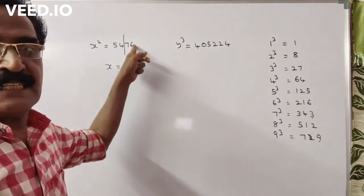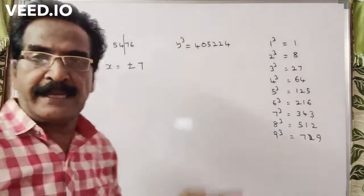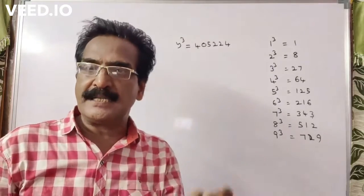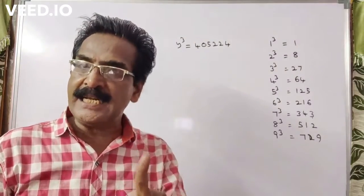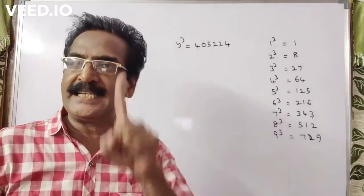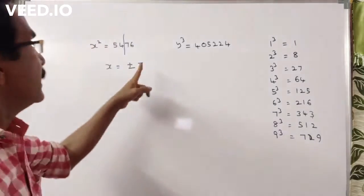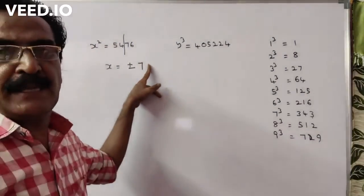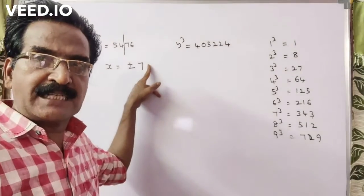The unit digit is 6, which means here it must be either 4 or 6. 4 times 4 is 16, and 6 times 6 is 36. So to get a unit digit of 6, the digit must be either 4 or 6.